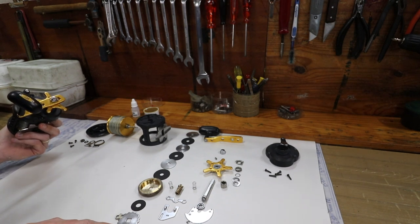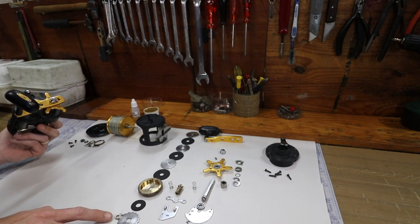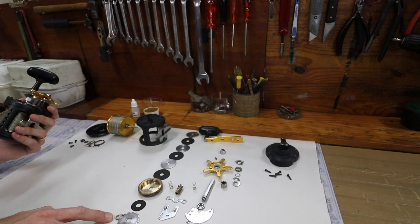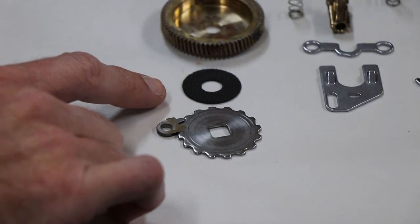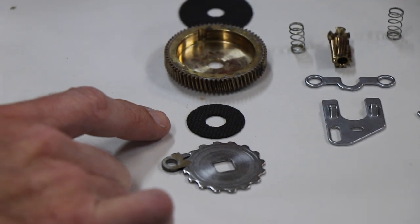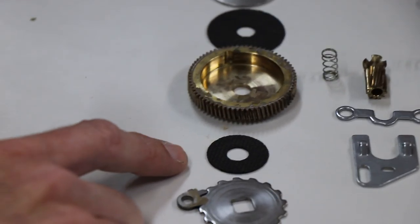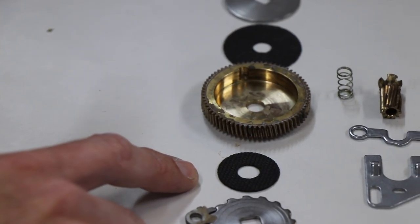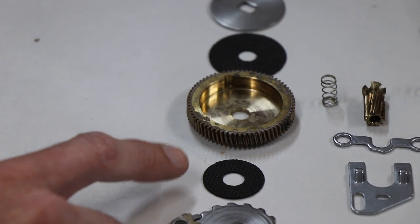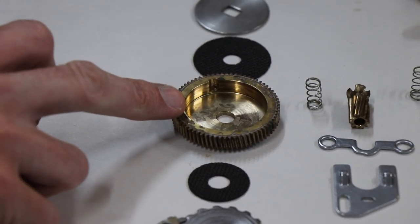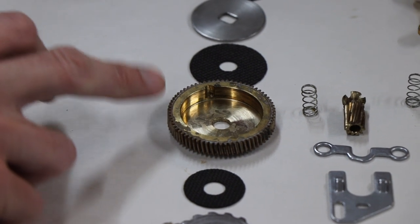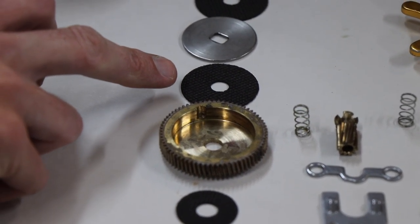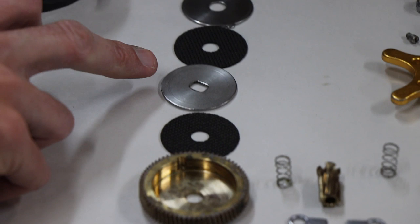You get your anti-reverse cam with your anti-reverse pawl. On top of that is your Carbontex drag washers. This reel does come with Carbontex washers. They are re-washable and you can re-grease them. They last for a very long time. Your drive gear, which is a big brass gear, and then all your Carbontex washers with your metal washers in between.